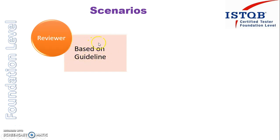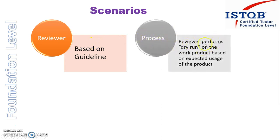Let's see what process the reviewer is going to follow. The reviewer will perform a dry run on the work products based on the expected usage of the product. First, he has to understand how this product will be used. And depending upon that, he will perform a dry run. When he is performing a dry run, people will ask questions, but they will ask questions only if they have knowledge about that product.